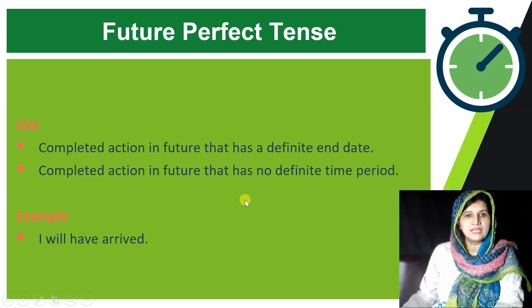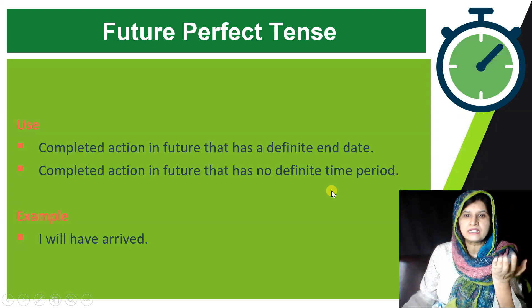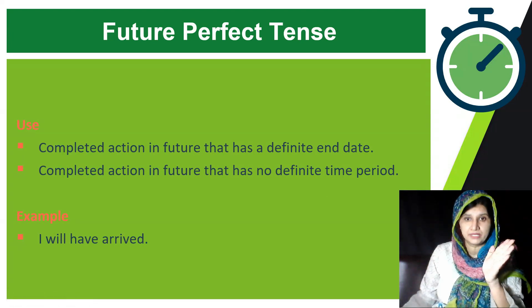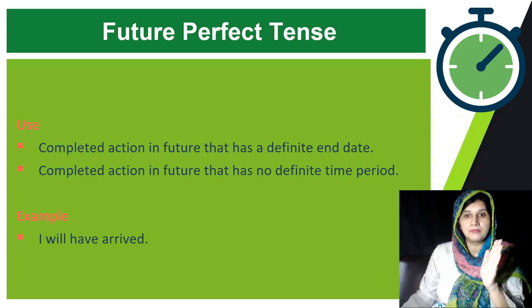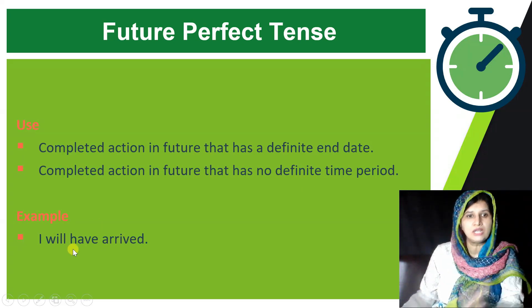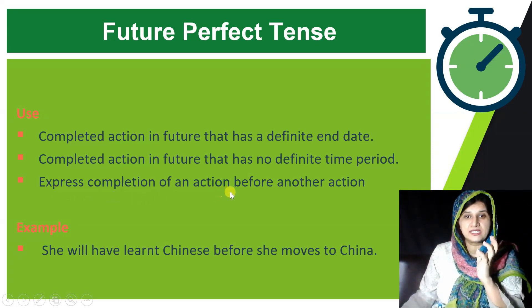Sometimes we use Future Perfect Tense to talk about a completed action in the future that has no definite time period. It is not always necessary to have a definite time marker — though most of the time you will find one, sometimes you may not use any time marker at all, such as simply saying 'I will have arrived.'